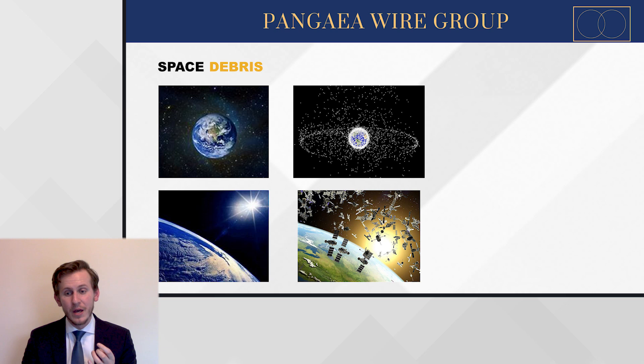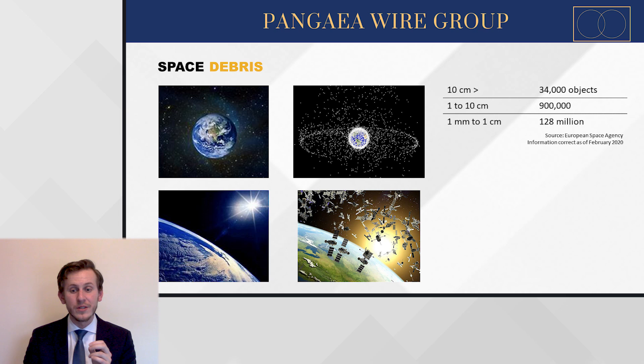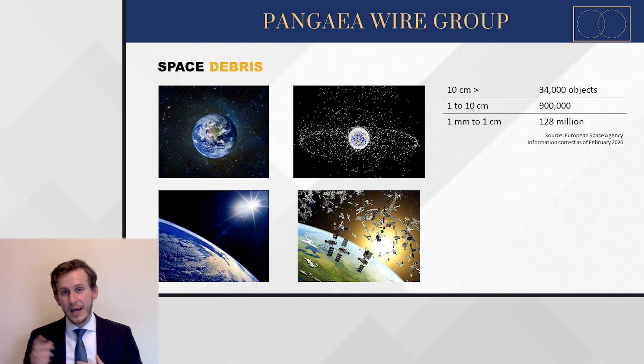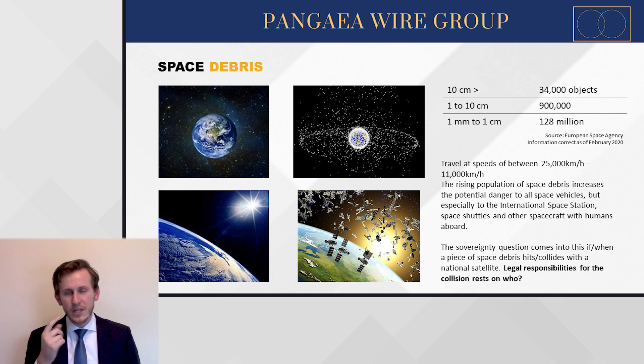Figures from the European Space Agency show the full extent of space debris. There are 34,000 objects that are 10 centimeters or larger in outer space. There are 900,000 pieces of debris between 1 and 10 centimeters. And there are 128,000,000 pieces of space debris between 1 millimeter and 1 centimeter. These are traveling at between 11,000 and 25,000 kilometers per hour — the closer to Earth, the faster the rotation; the further out, the slower.